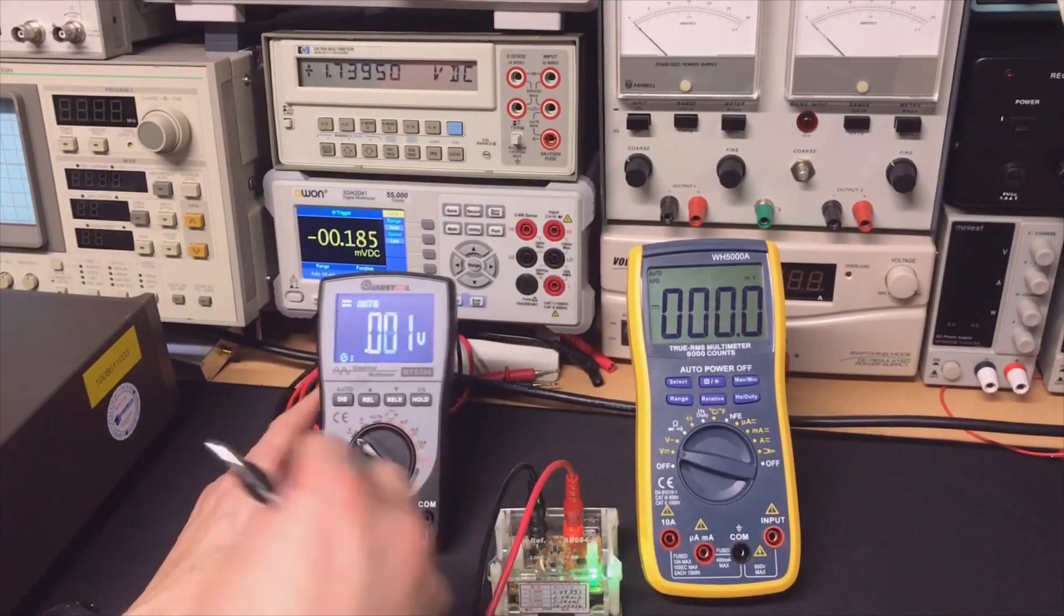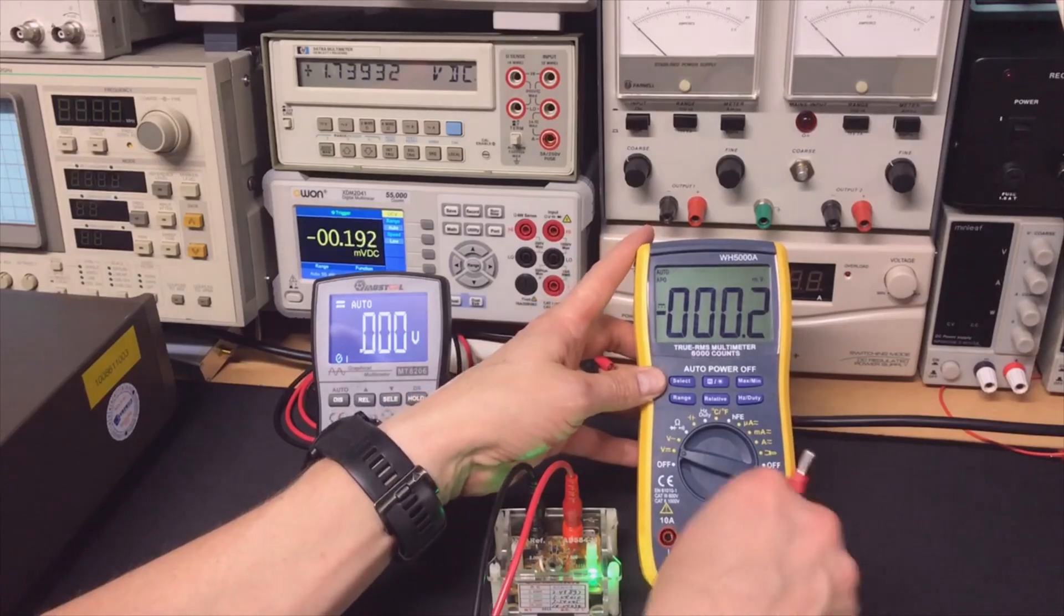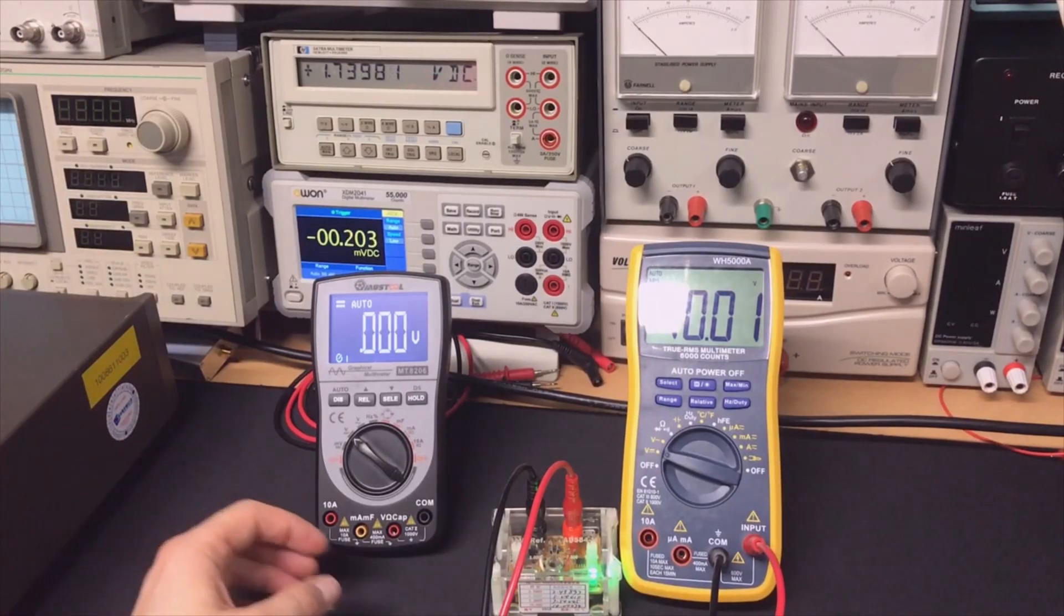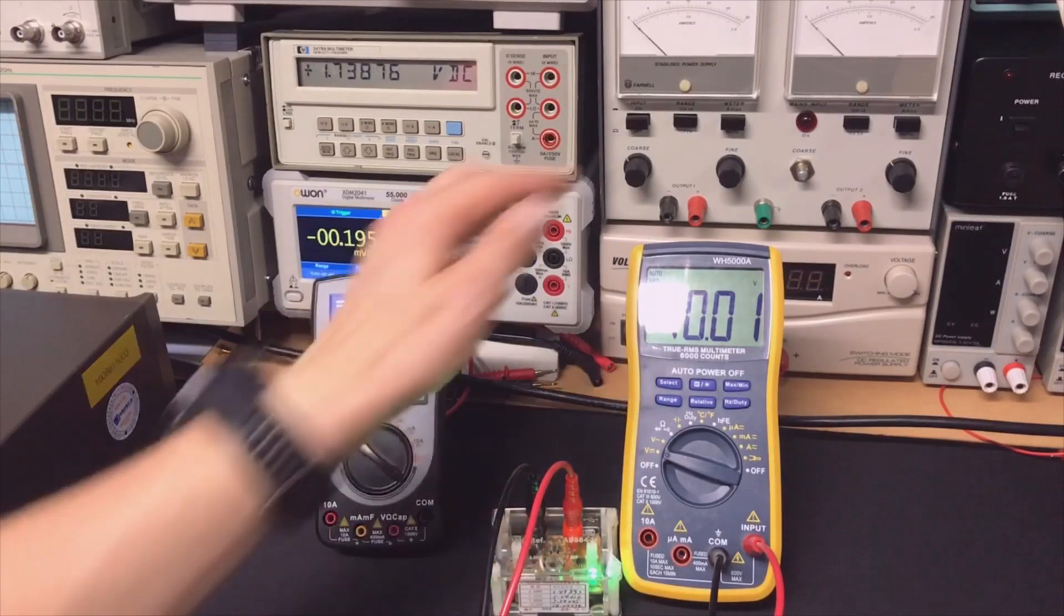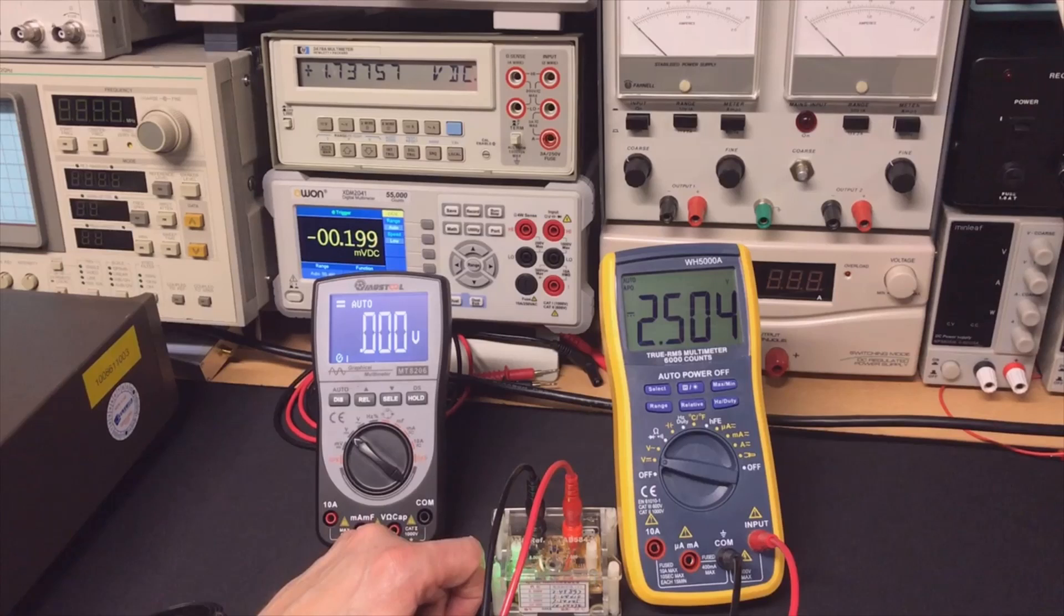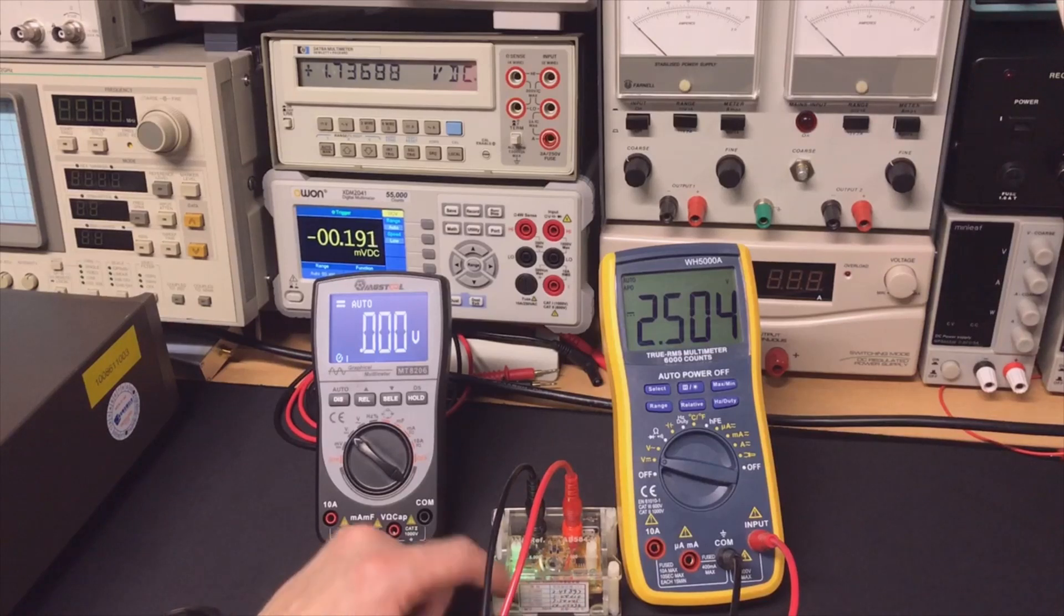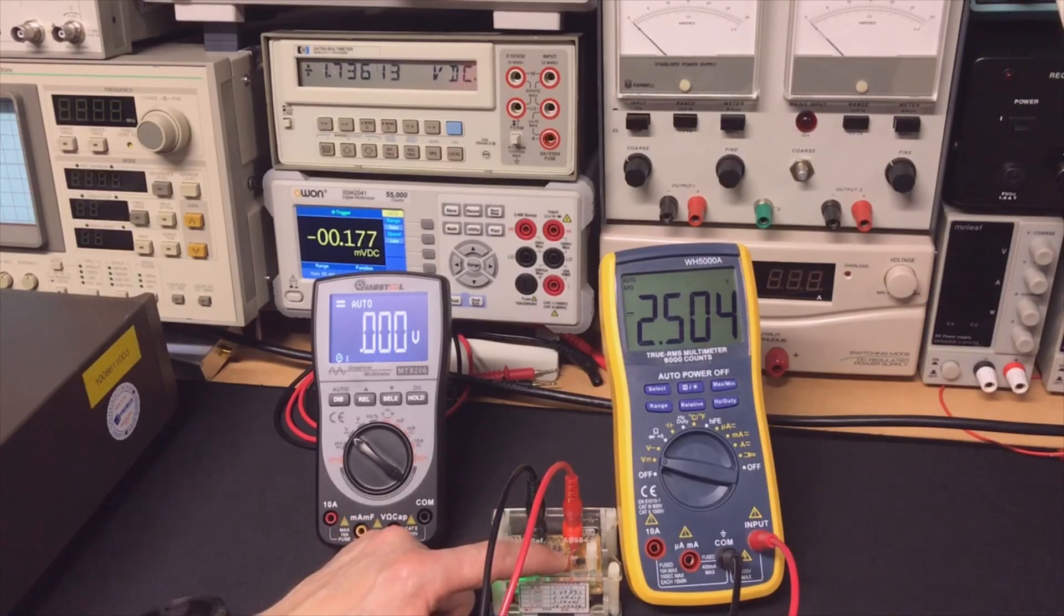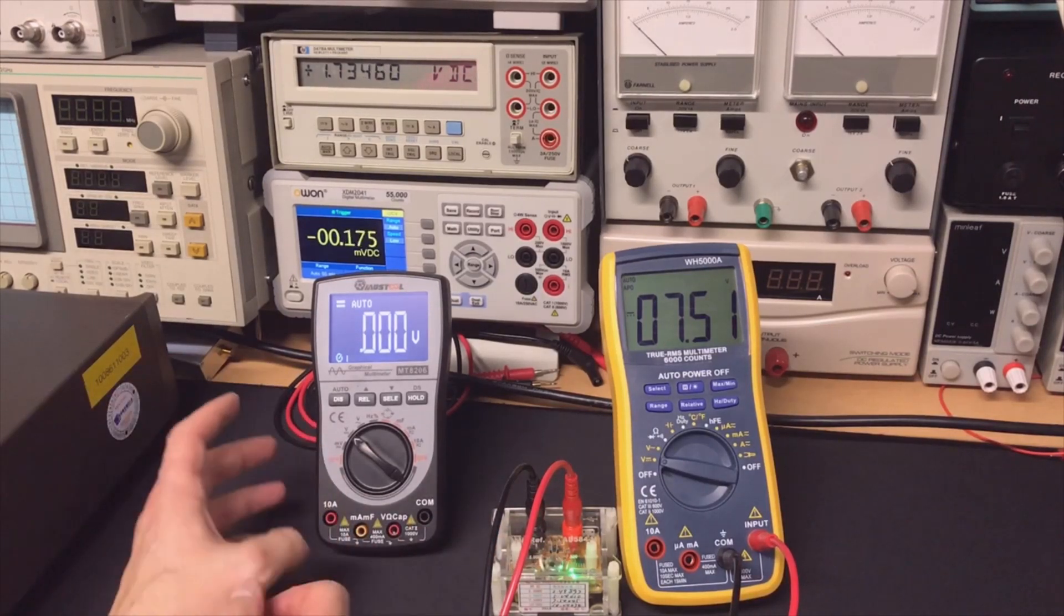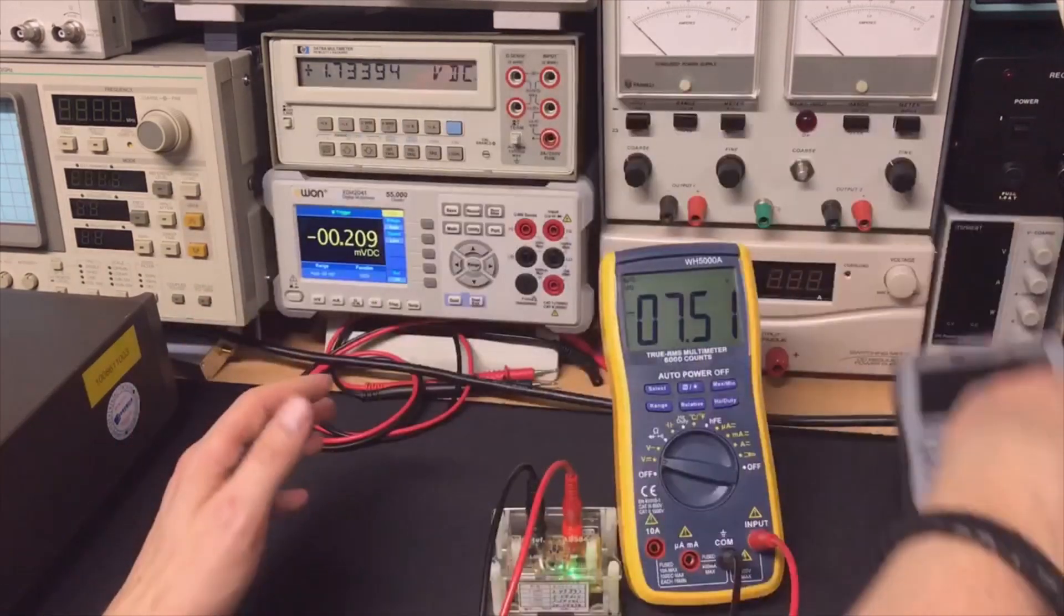What we have here... The 2.5 is too much because it says 2.504. Well, it should say like 2.499. And 5 volts is also too much. So this meter is less good according to my standard. Let's see what the other one says.